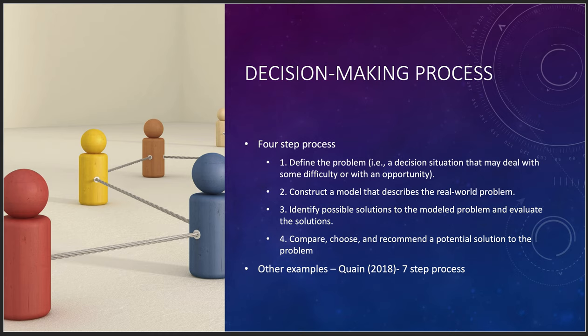Next, construct a model that describes the real-world problem. Everyone has biases — implicit and explicit — and you don't want to build those into your model. You want to construct a neutral model with as little bias as possible, which is hard. Your model can be too optimistic or too pessimistic depending on your general outlook. Having more than one person work on the model helps ensure a neutral, factual tone.